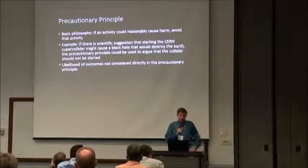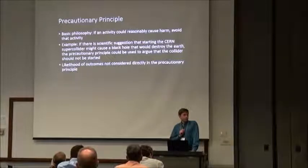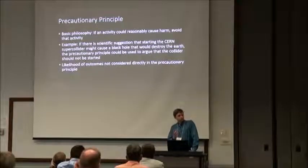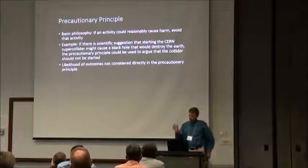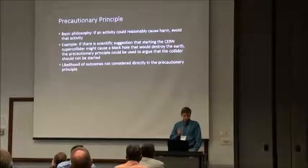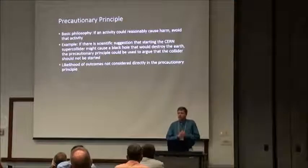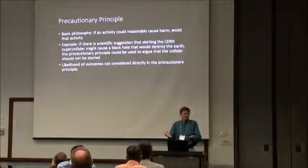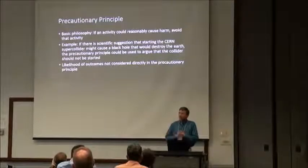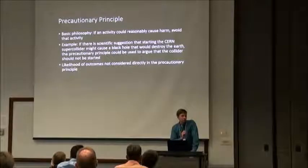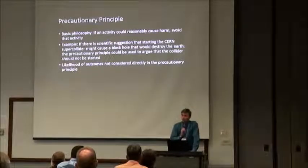The precautionary principle: if an activity could reasonably cause harm, avoid that activity. A real example — there was a suggestion that starting the CERN supercollider could create a black hole that would swallow the Earth. The precautionary principle would say don't start it. Risk analysts instead did a back-of-envelope calculation of the probability of CERN failing Earth. They started CERN and everything was fine. The likelihood of the outcome doesn't directly come into consideration under the precautionary principle.